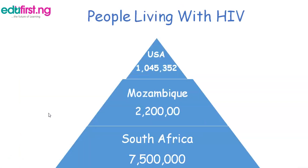Now let's compare the population of people living with HIV in different countries of the world. According to 2018 reports, in Mozambique, two million two hundred thousand people are living with HIV. In South Africa, seven million five hundred thousand people are living with HIV.